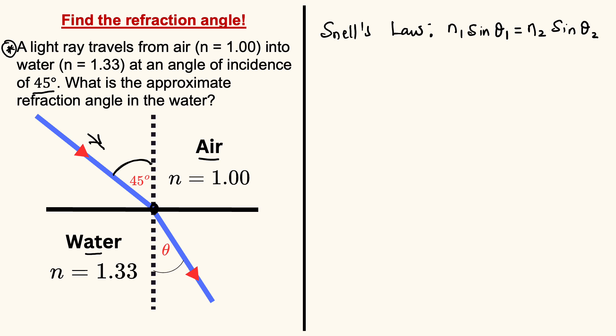From this problem, we are given N1, the refractive index of air, to be 1.00, and N2, the refractive index of water, which is 1.33. We are given the angle of incidence, the light is incident in the first medium which is air at an angle of 45 degrees, and then it gets refracted in water because it has traveled from one medium into another medium of a different refractive index.